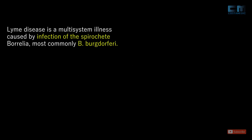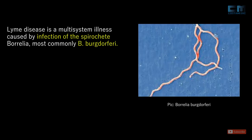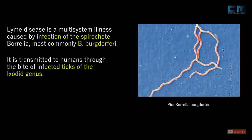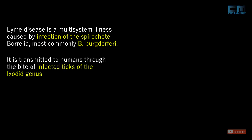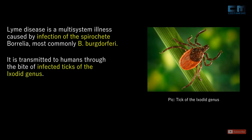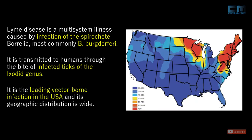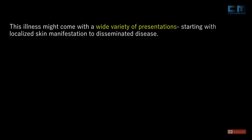Lyme disease is a multisystem illness caused by infection of the spirochete Borrelia, most commonly Borrelia burgdorferi. It is transmitted to humans through the bite of infected ticks of the Ixodid genus. It is the leading vector-borne infection in the USA and its geographic distribution is wide. This illness might come with a wide variety of presentations, starting with localized skin manifestation to disseminated disease.